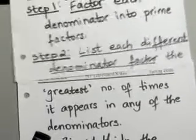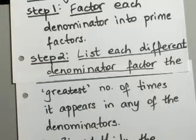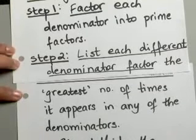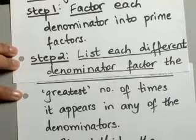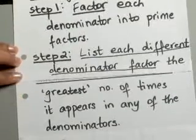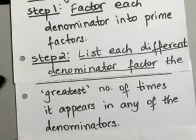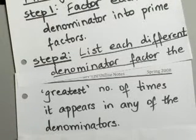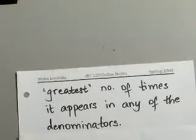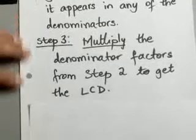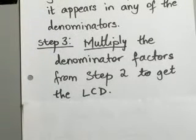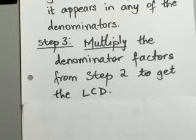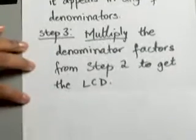The idea is if it appears twice in one denominator but three times in the other, then you write it three times, since that's the greatest number it appears. Especially with variables, you want to keep this in mind — list the different denominator factors the greatest number of times they appear. The last step would be to multiply all the denominator factors you found in step two to find your least common denominator. Keeping these steps in mind, let's look at some simple examples first.